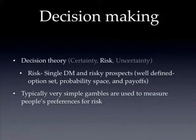Decision theory has this demarcation between certainty, risk, and uncertainty. A lot of attention is dedicated to risk, meaning there's some single monolithic decision maker presented with risky prospects. These things are well defined: a well-defined option set, well-defined probabilities, and the payoffs are very clear for each. Typically, very simple gambles like this are used to measure people's preferences for risk.